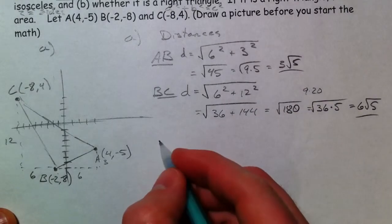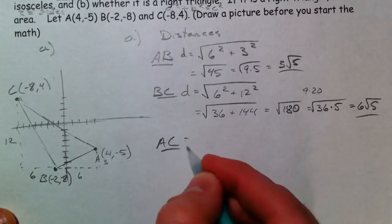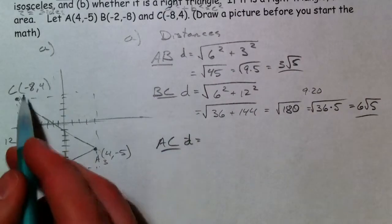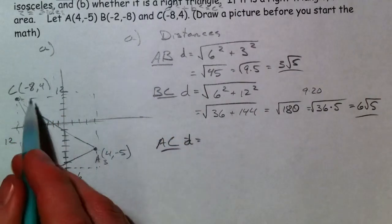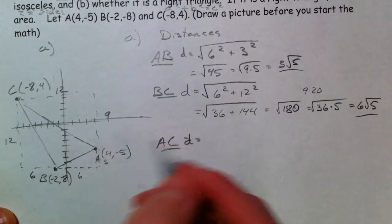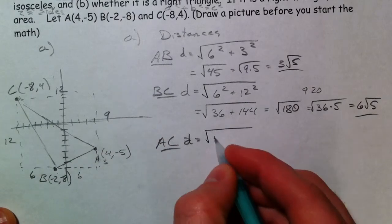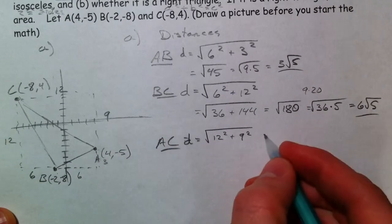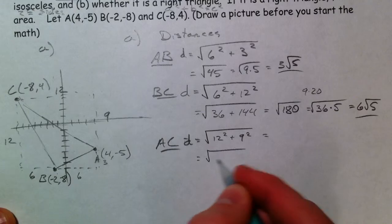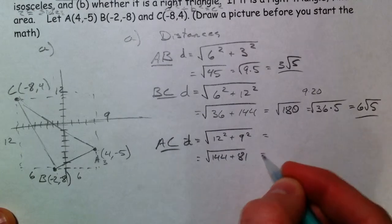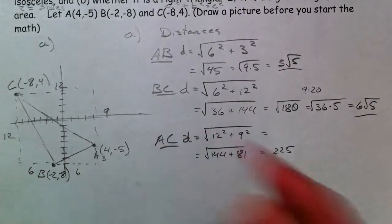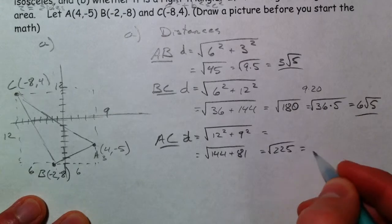And then AC. To go from -8 to 4, we go 12. To go from 4 to -5, we go down 9. So 12 squared plus 9 squared. 144 plus 81 equals 225. And that's 15.